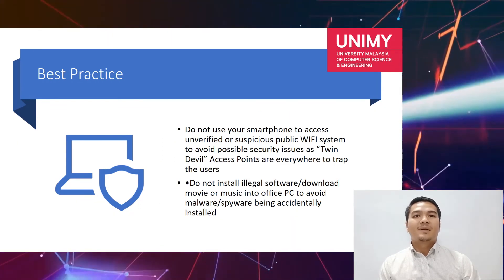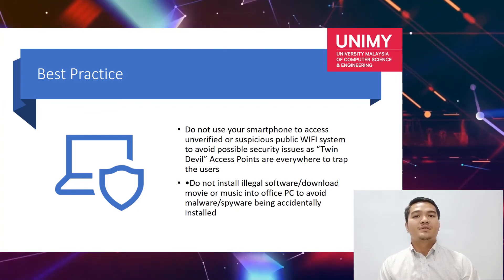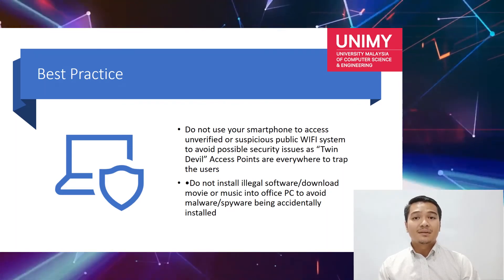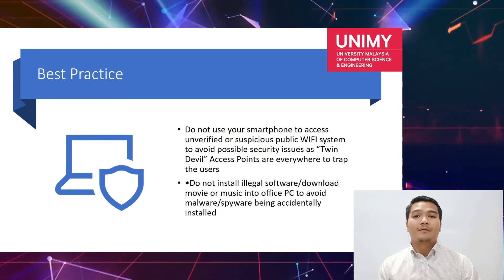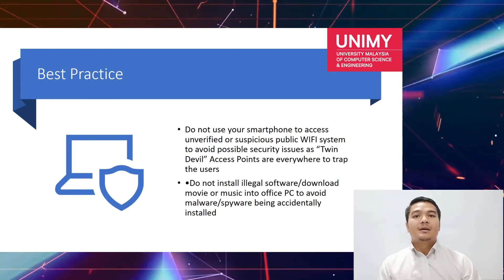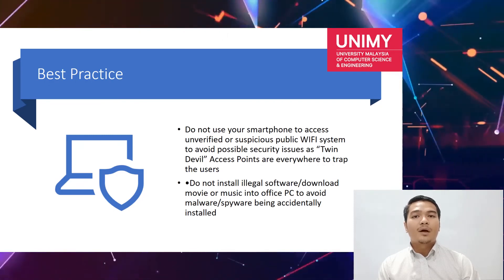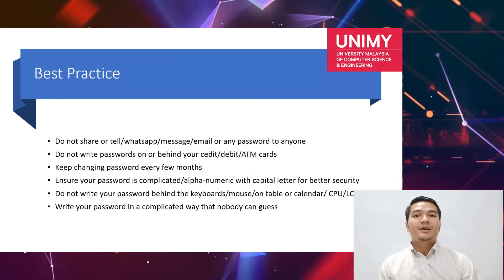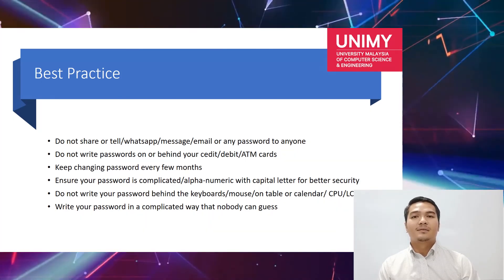Here are some best practices. First, do not use your smartphone to access unverified or suspicious public Wi-Fi systems to avoid possible security issues such as evil twin access points that trap the user. Say no to public Wi-Fi — it is not secure. Second, do not install illegal software or download movies or music onto office PCs to avoid malware or spyware being accidentally installed. Third, do not share or tell your WhatsApp, email or any password to anyone — keep it to yourself.